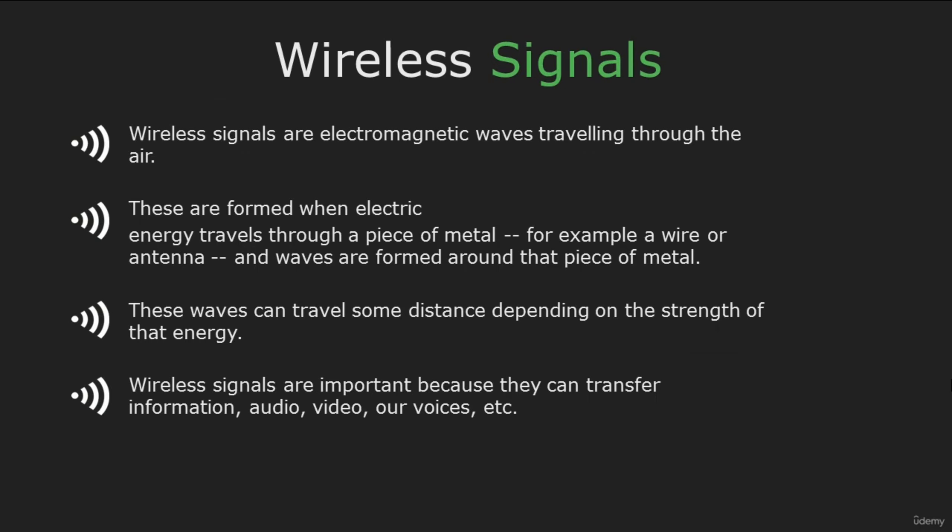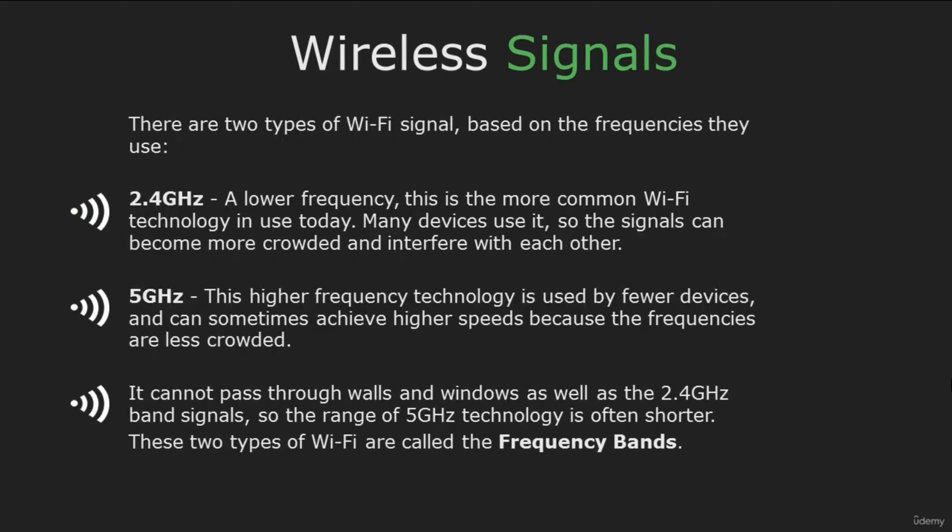Next is wireless signals. Wireless signals are electromagnetic waves traveling through the air. They are important because they can transfer information like audio, video, voices and so on. There are two types of Wi-Fi signal: 2.4 GHz, a lower frequency which is the more common Wi-Fi technology in use today, and the 5 GHz, a higher frequency used by fewer devices that can achieve higher speeds.